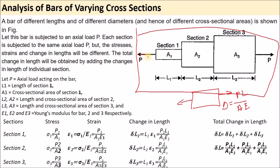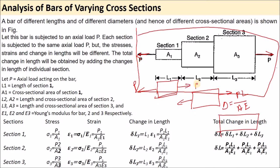Load P is acting at the outer ends. Both loads are acting, and we have section one, section two, and section three. Due to equilibrium, the same load acts throughout — tensile P in each section — and in this way we can solve the problem.